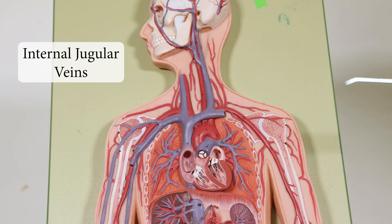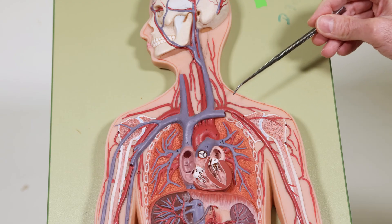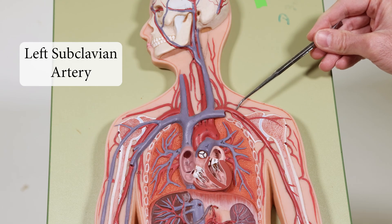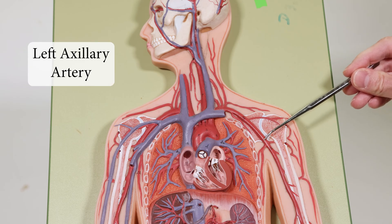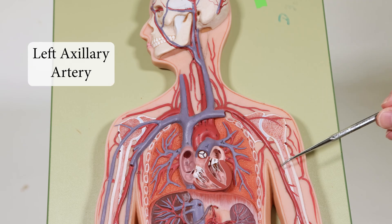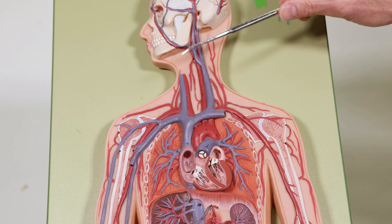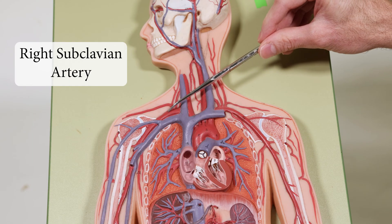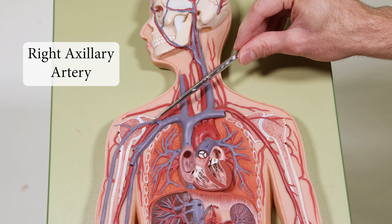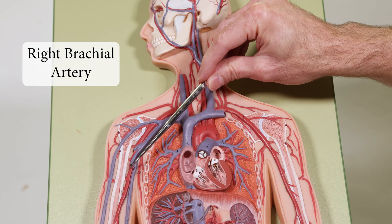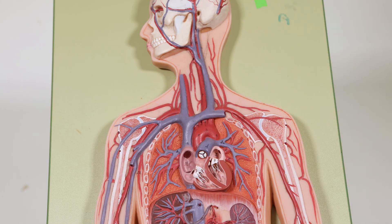Coming into the arm here, this is the left subclavian artery going down into the left axillary artery, and then into the left brachial artery. On the right side, you have the right subclavian artery, the right axillary artery, and the right brachial artery.